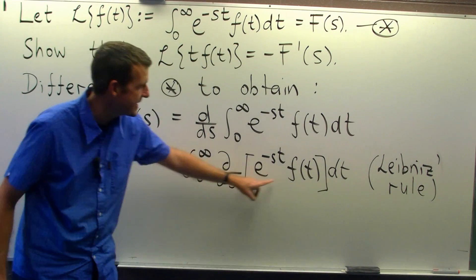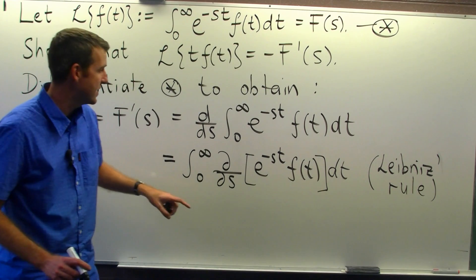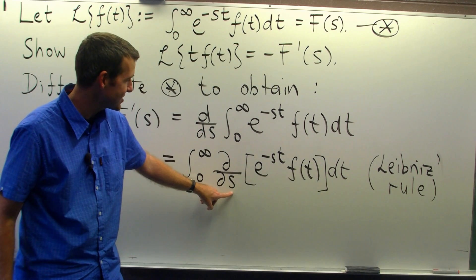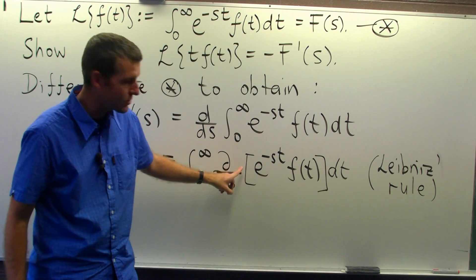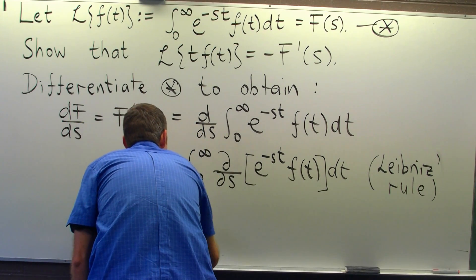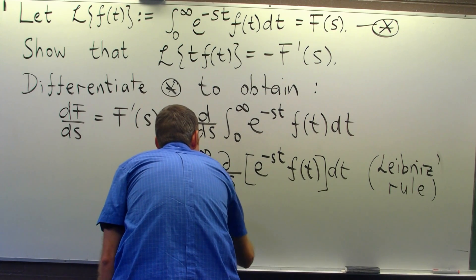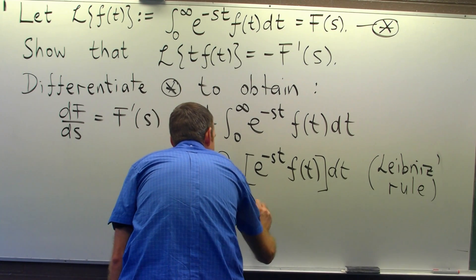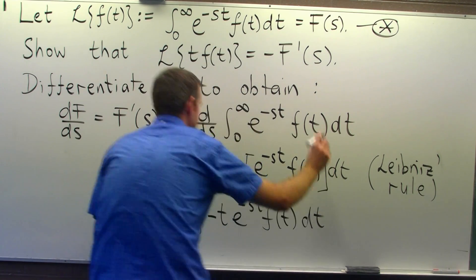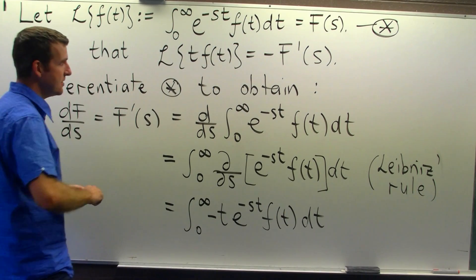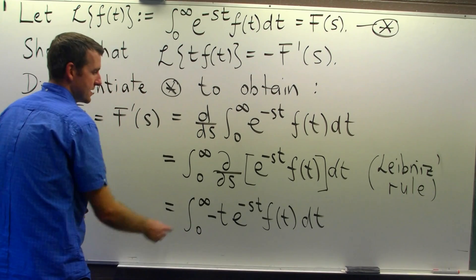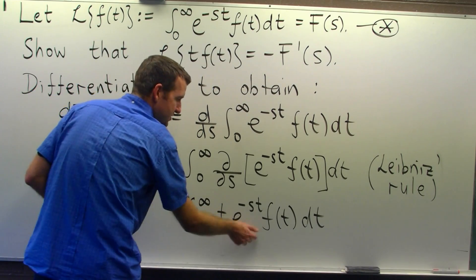All that really remains now is to take this derivative. Because we're differentiating with respect to s partially, a minus t will come to the front, and the rest will be unchanged. If we rearrange this, I can pull that minus sign out the front and put the t over here.